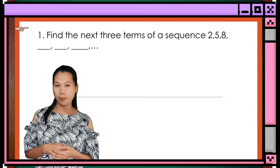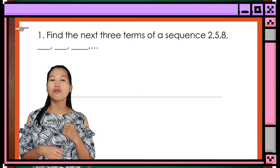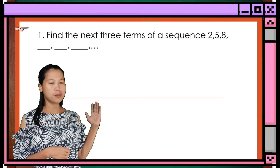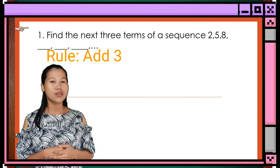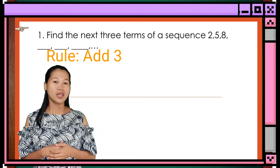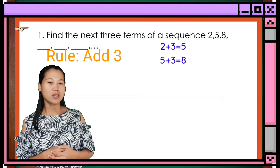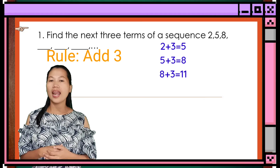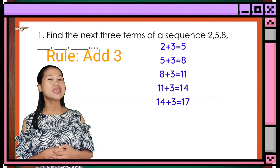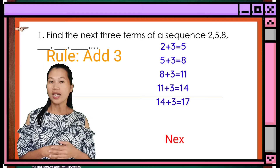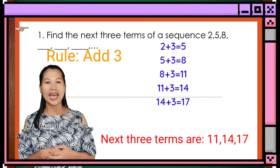Consider the following examples. Find the next 3 terms of a sequence: 2, 5, 8, blank, blank, blank. The rule is add 3. 2 plus 3 equals 5. 5 plus 3 equals 8. 8 plus 3 equals 11. 11 plus 3 equals 14. And 14 plus 3 equals 17. Therefore, the next 3 terms of the sequence are 11, 14, and 17.